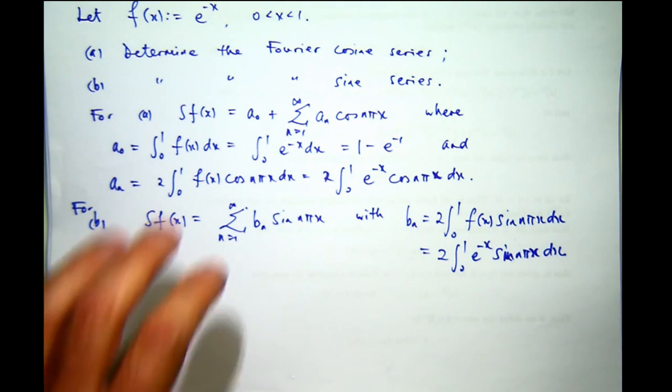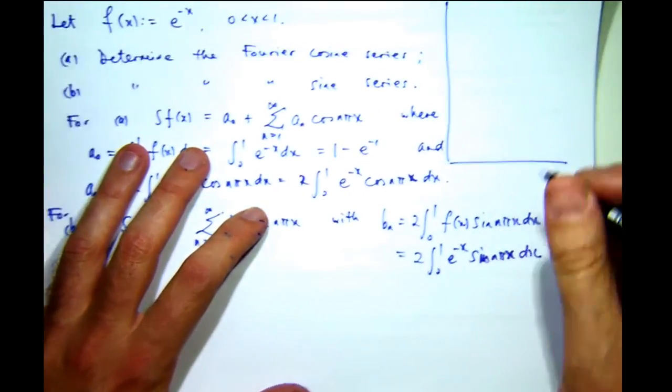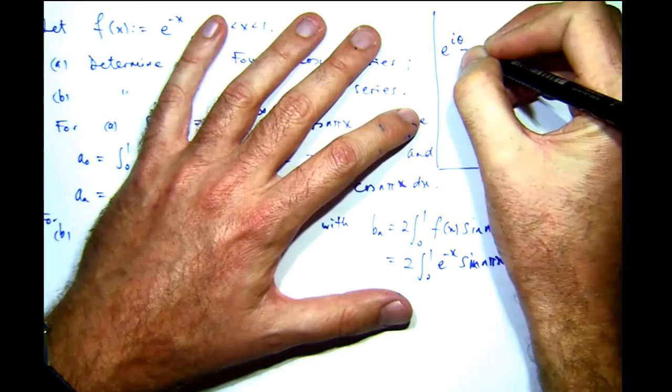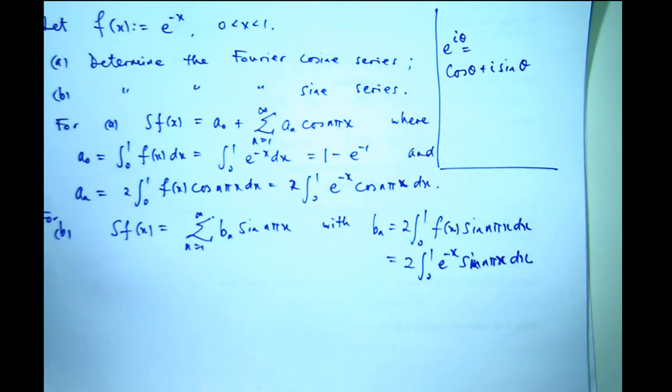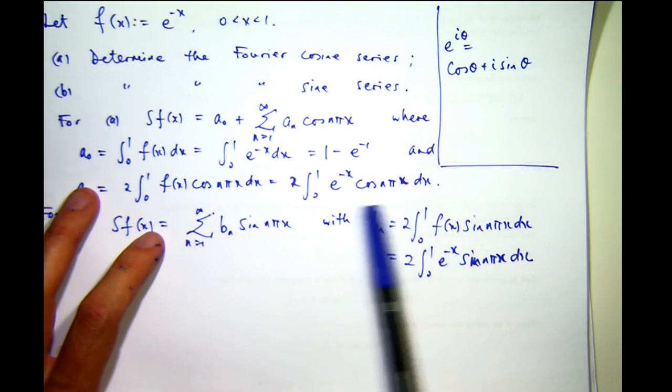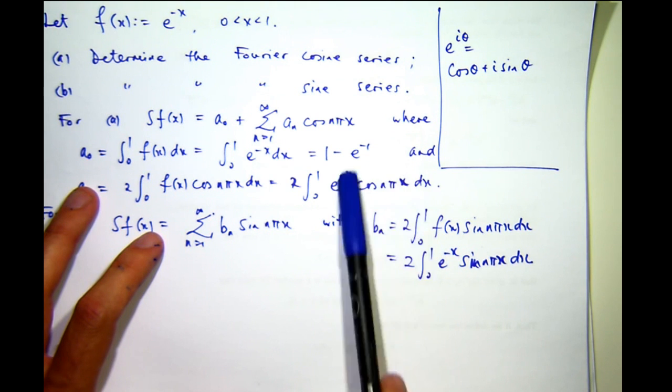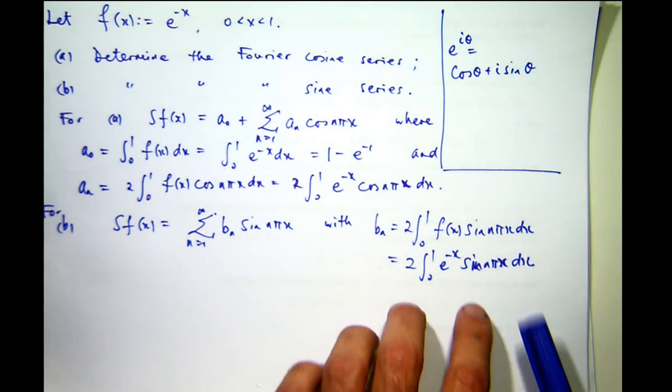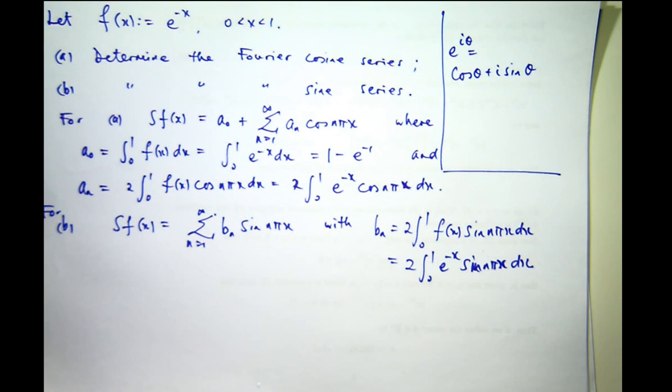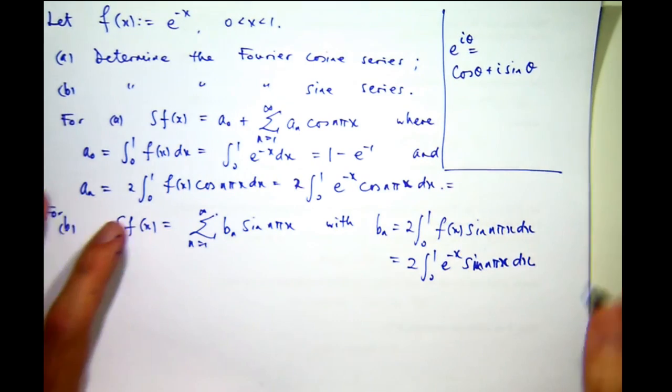Now, remember Euler's formula involving complex numbers: e to the i theta equals cosine theta plus i sine theta. Now, how does that help us? Well, if you look at this, this term here is just the real part of e to the i n pi x. This part here is the imaginary part of e to the i n pi x. So, actually, what we're going to do is the following.